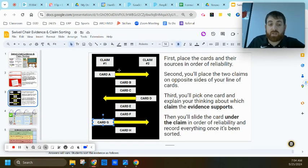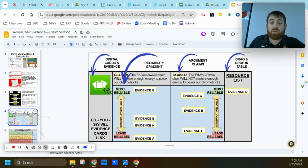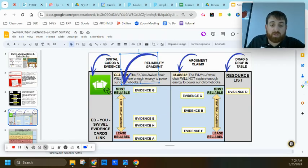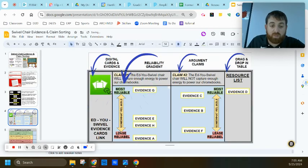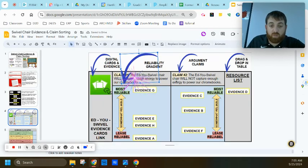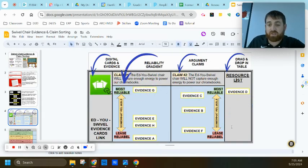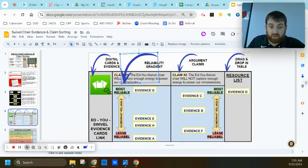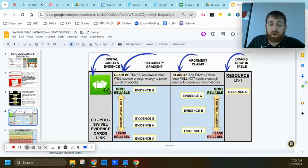As you and your group are sorting these cards not only by reliability but by which claim, what you'll have at the end is a set of cards on one side and a set of cards on the other. Once you've come to a consensus, you can then record your cards under which claim and how reliable they are. If you notice here we have our cards if you need to reference them at any point, but as you're going through you'll notice that we have our reliability gradient from most reliable down to least reliable. You'll notice we have our claims claim one and claim two, and then we have our list of resources with our evidence cards there. As you're looking at this, you'll notice that under each claim you'll have your cards, but they're still in order of reliability.